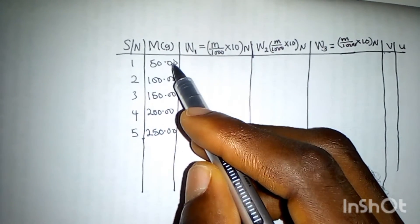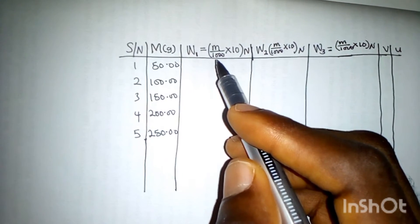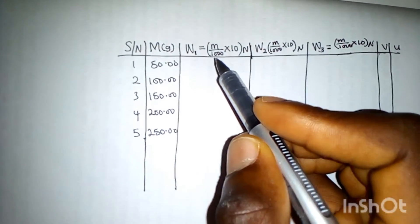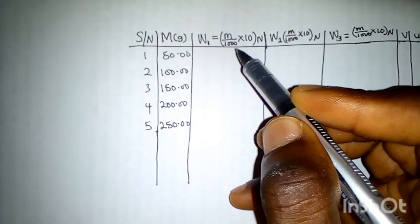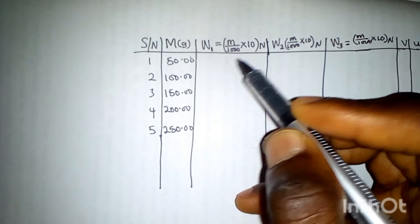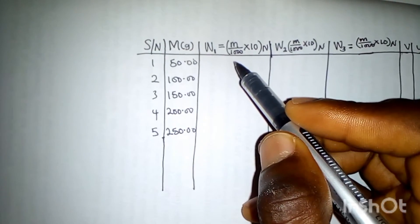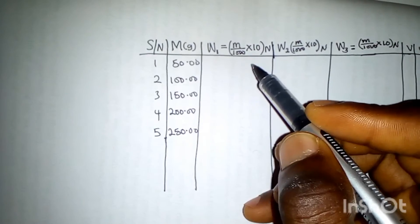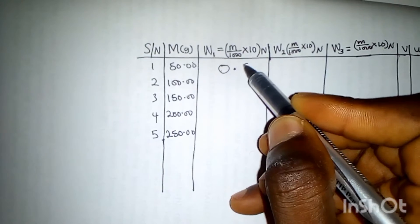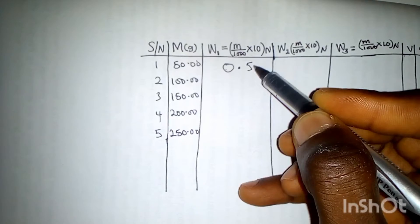Since weight one in air is the weight of this object in air, that's 50 grams. So I'll have 50 over 1000, which gives me 0.05. If I have 0.05 times 10, I'll have 0.5. So what's supposed to be here should be 0.5 Newton.